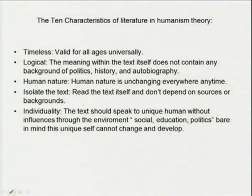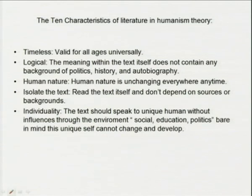What is poetry? What is literature? What is the text? These are excellent things — only we cannot examine taste and sympathies. Examiners must have technical and positive information to examine. The ten characteristics of literature in humanism theory include: it is timeless, valid for all ages universally; it is logical; the meaning within the text itself does not contain any background of politics, history, or autobiography; human nature is unchanging everywhere at any time; isolate the text — read it itself and do not depend on sources or backgrounds; individuality should speak to a unique human without influences from the environment.